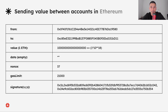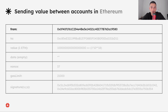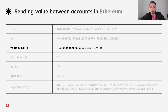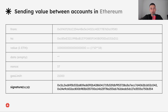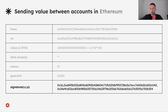Let's talk about the first scenario, which is sending value between accounts. Let's say that Alice wants to send one ETH to Bob. The 'from' field will have Alice's address, the 'to' field will have Bob's address, and the value will be one ETH — so we write 1 times 10 to the power of 18 because we express this value in wei. The data in this case will be empty because we are not writing any data into the blockchain or calling smart contracts. The nonce is 37, assuming Alice has made 36 transactions before. The gas limit standard for Ethereum transactions is 21,000. And the signature is the result of Alice's private key signing the transaction. The values are divided with commas just to make it easier to read, but normally when sending transactions to the blockchain, it should be without any spaces or commas.